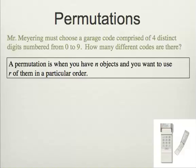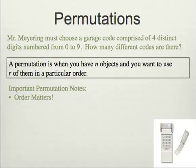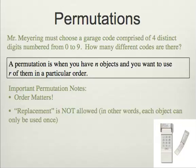And so we talk about what a permutation is. It's when you have N objects and you want to use R of them in a particular order. The order mattering is extremely important for us to talk about a permutation. The next important thing is that replacement is not allowed.